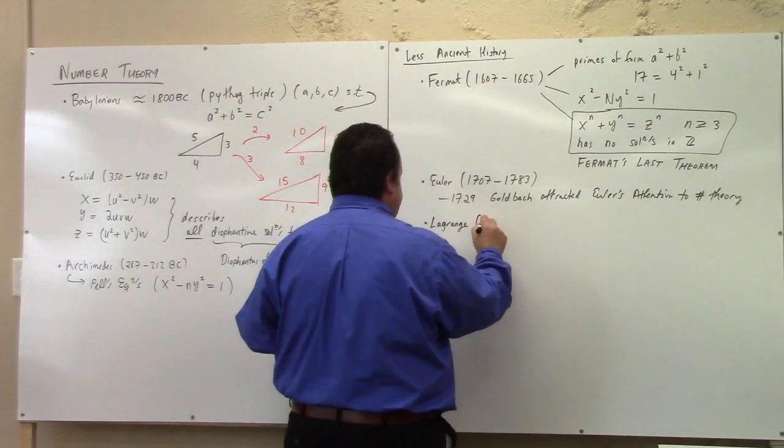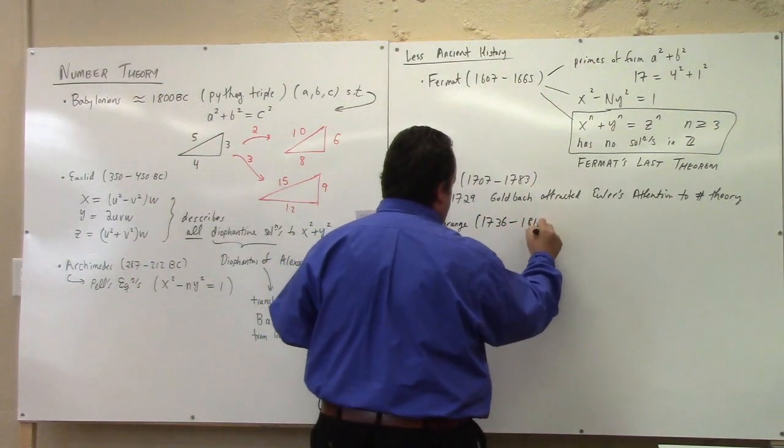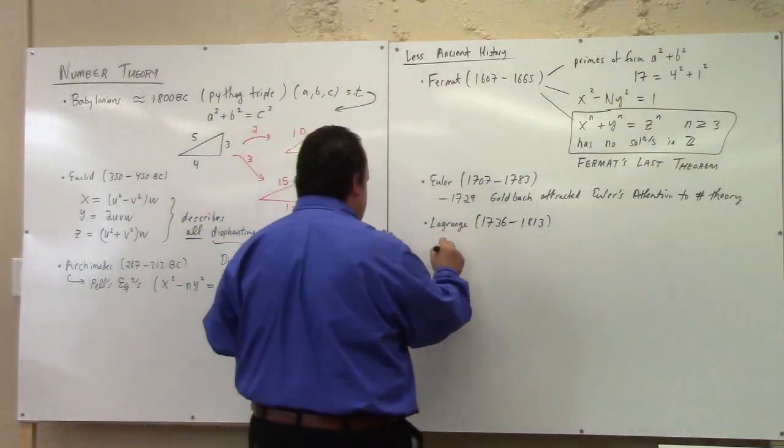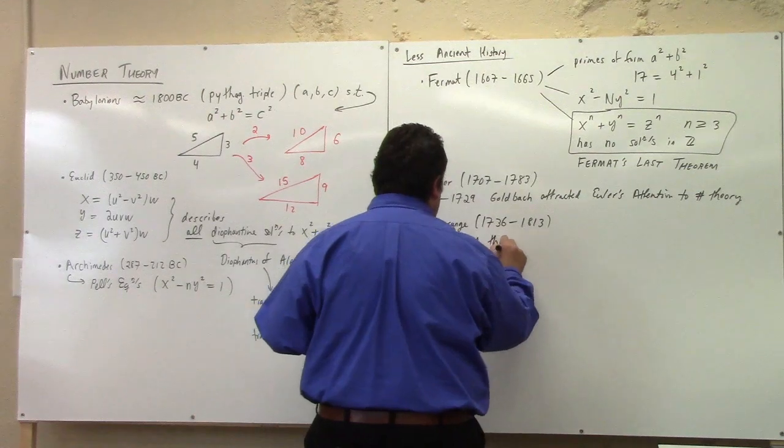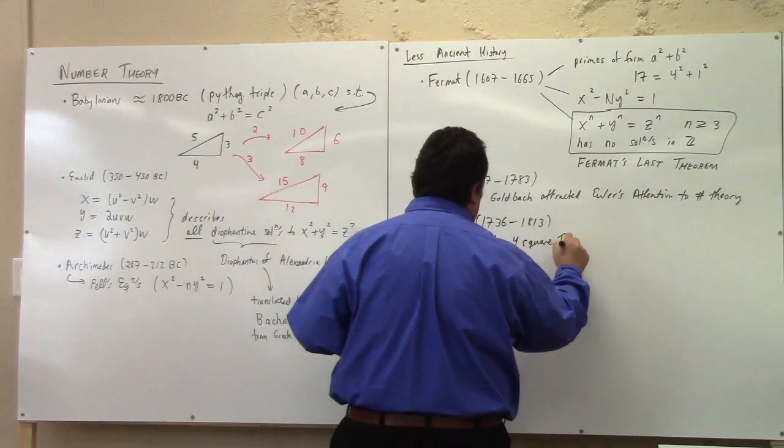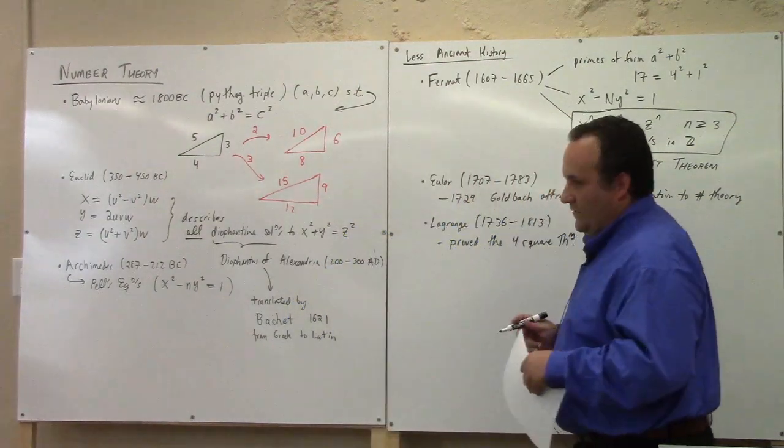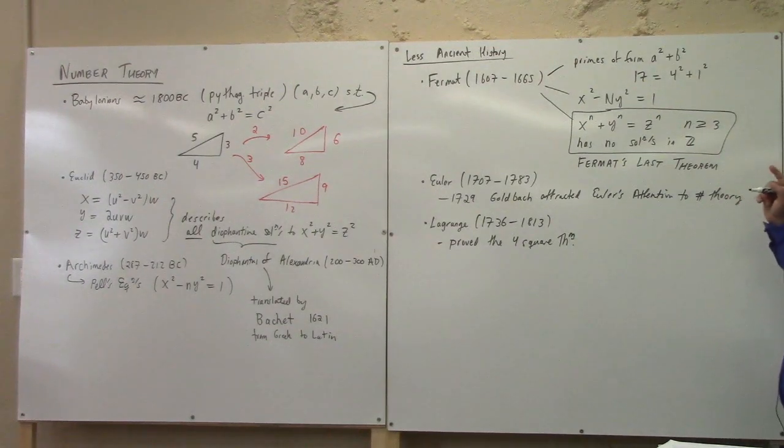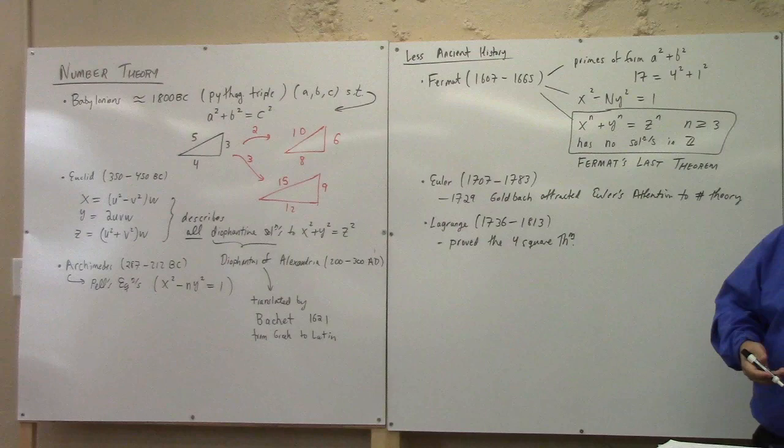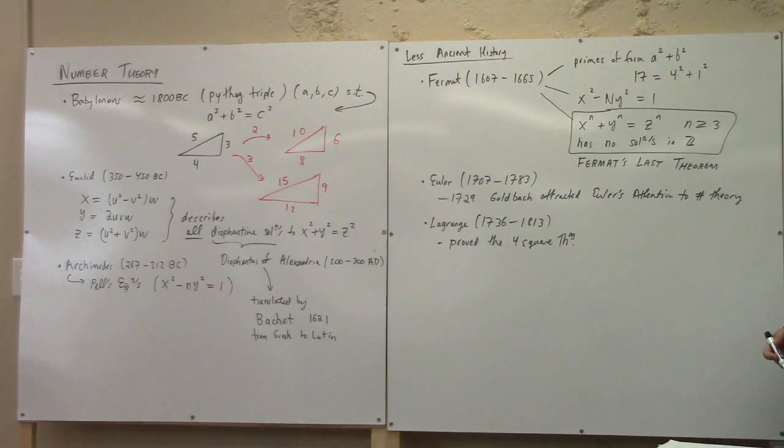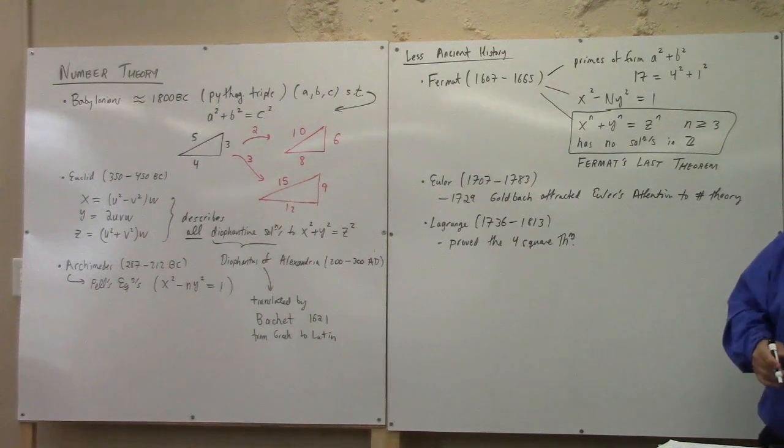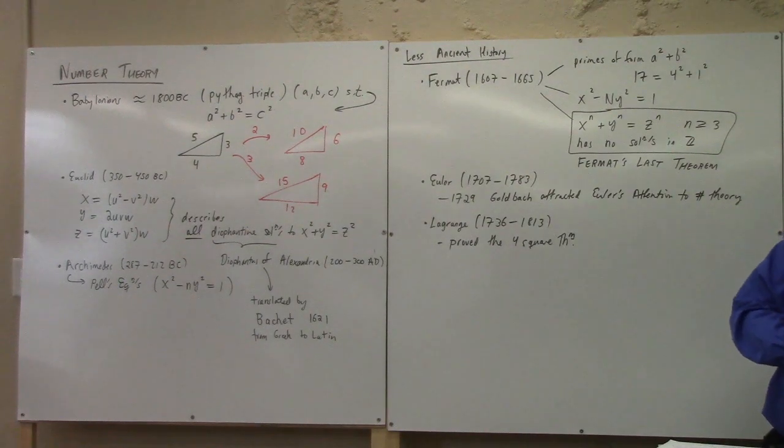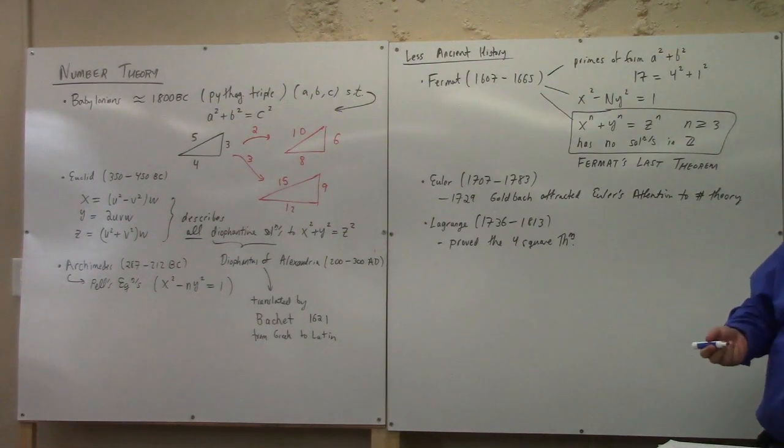Lagrange, 1736 to 1813. You see he overlaps with Euler. And Lagrange did, among other things, he proved the four-square theorem. I think we'll do that in here. What's the four-square theorem? The four-square theorem was known to Fermat. The four-square theorem simply says that any positive integer can be written as the sum of four squares.